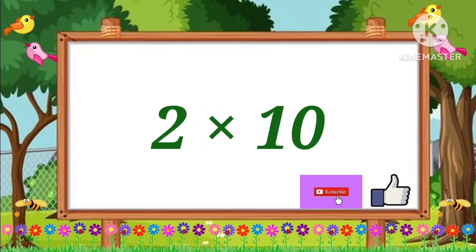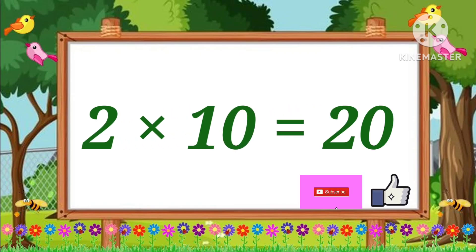Two tens are twenty. Two tens are twenty. Okay, very good children. Now let's repeat with me.